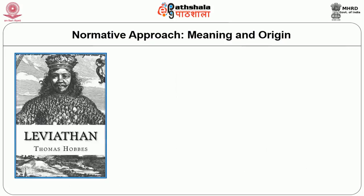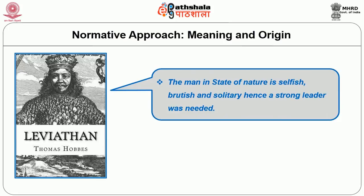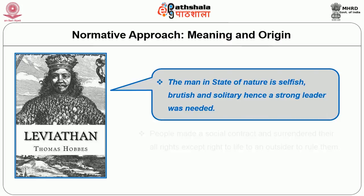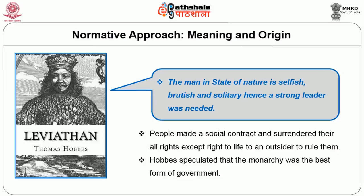The Leviathan of Hobbes portrayed man in the state of nature as selfish, brutish, solitary and quarrelsome. Hence a strong leader was required to control such nature of man. People made a social contract, he says, and surrendered all their rights except the right to life to an outsider who came to rule them. Hobbes speculated that monarchy was the best form of government.